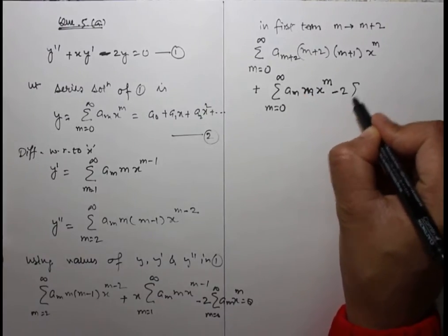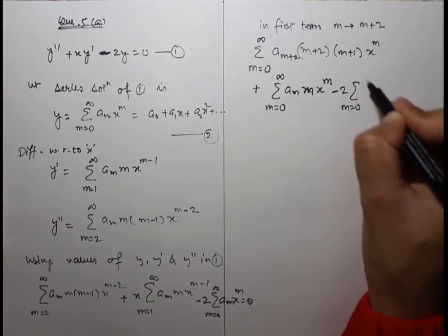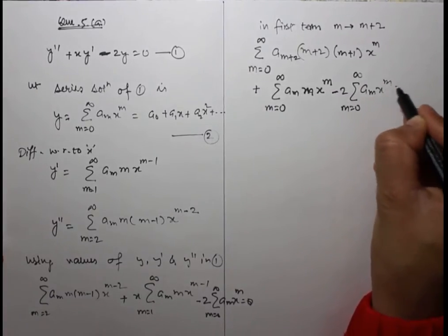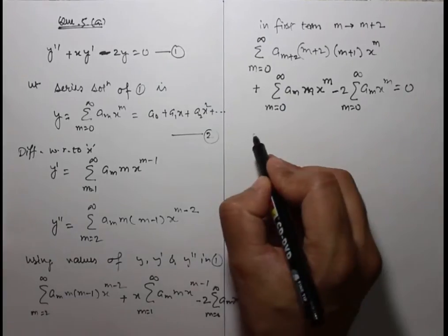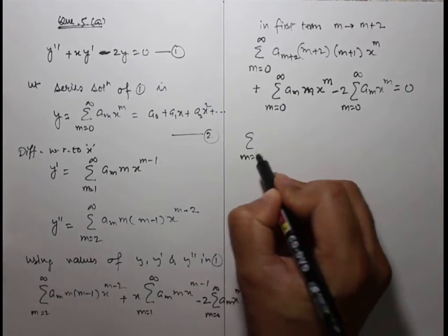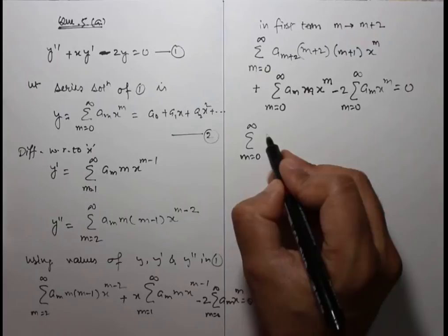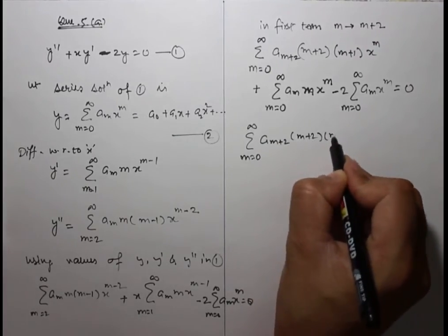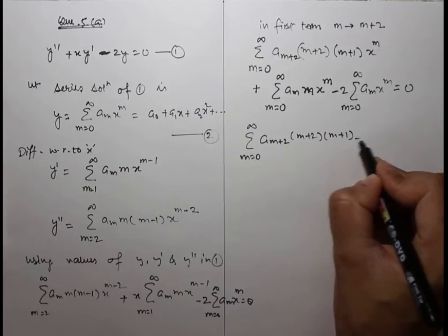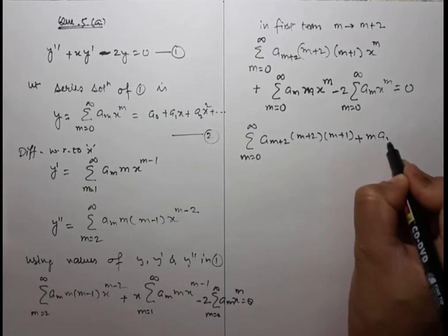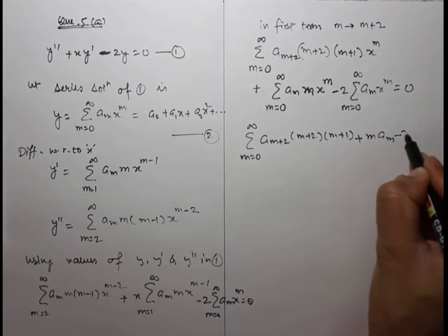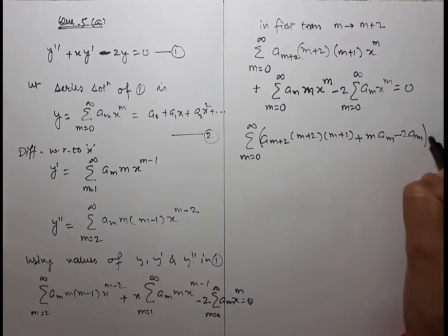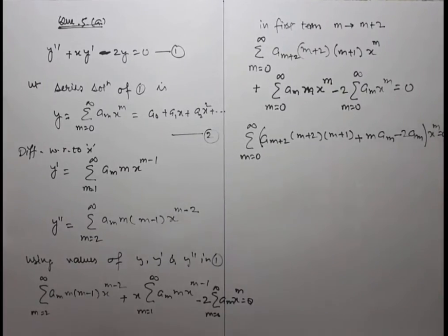The combined series gives, for m = 0 to ∞: a_(m+2)(m+2)(m+1) + m·a_m - 2a_m, all multiplied by x^m equals 0.